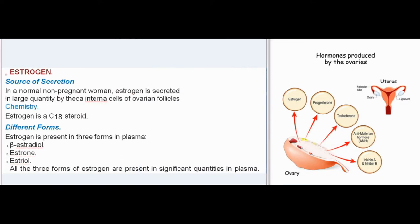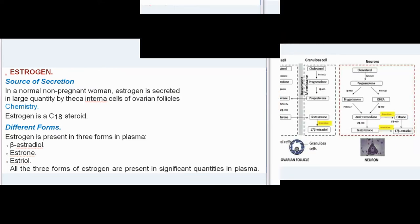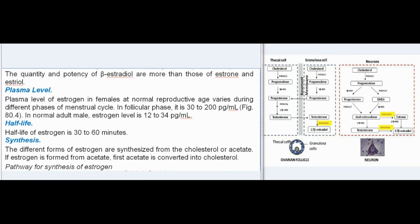Estrogen. Source of secretion: in a normal non-pregnant woman, estrogen is secreted in large quantity by theca interna cells of ovarian follicles. Chemistry: estrogen is a C18 steroid. Different forms: estrogen is present in three forms in plasma — beta-estradiol, estrone, and estriol. All three forms are present in significant quantities in plasma, but the quantity and potency of beta-estradiol are greater than those of estrone and estriol. Plasma level of estrogen in females at normal reproductive age varies during the menstrual cycle; in follicular phase it is 30 to 200 pg/ml. In normal adult males, estrogen level is 12 to 34 pg/ml.